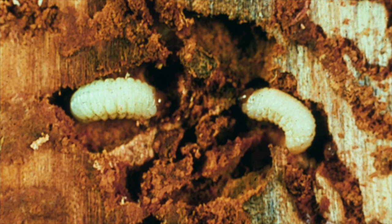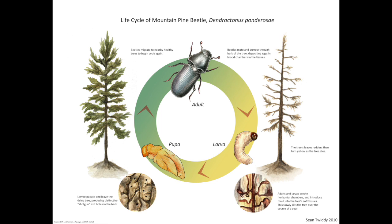Natural selection, in which organisms that are more fit to survive produce more offspring, is shown in how pine beetles reproduce. Female beetles begin by constructing vertical straight egg galleries underneath the bark of pine trees. Females then lay small eggs, which normally hatch during the summer or early fall. Once hatched, the pine beetles become larvae, which are legless and white with brown heads. Larvae remain in this stage for about 10 months before building oval cells, which transforms them into pupae. By July, most pupae are transformed into adults.